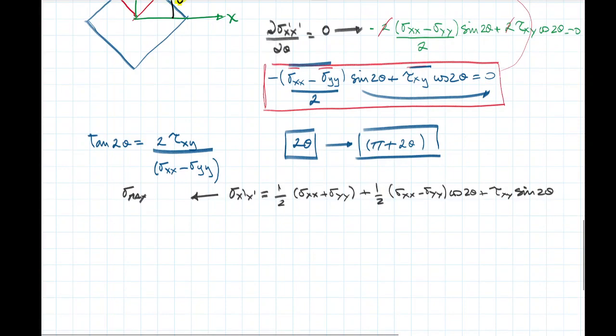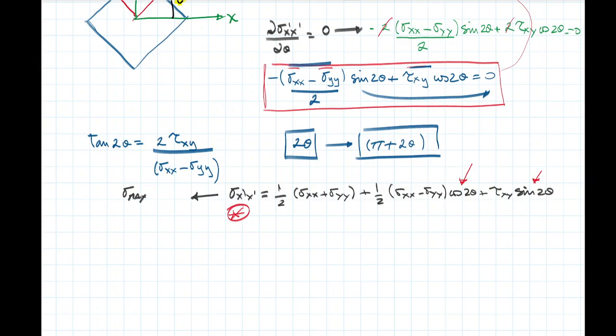The next step is to find the value of the angle, input the angle into the trigonometric relationships — the cosine and sine — and that will give me the equation resulting in the maximum normal stress. You'll see in the textbooks that this equation is given right away, but to go from this point to that equation, we need to find what is the value of cosine of 2 theta and sine of 2 theta in terms of the equation we got from differentiating the normal stress equation in an inclined plane.